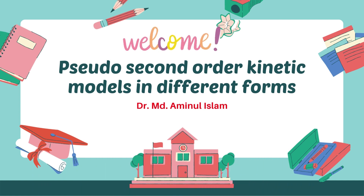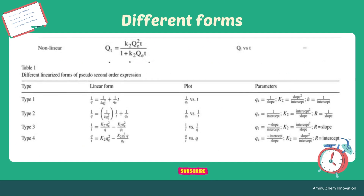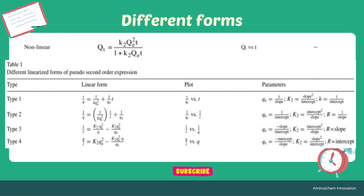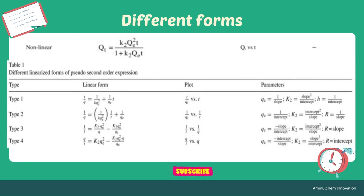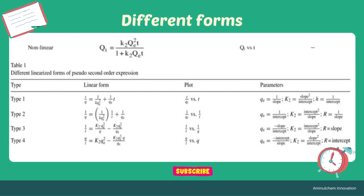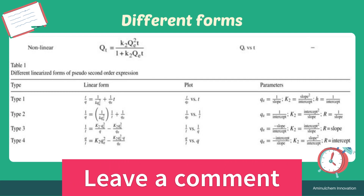This video is very important, so please do not skip. There are two forms of pseudo second order kinetic models. The first one is the non-linear form, which can be written as qt equal to k2·qe²·t divided by 1 plus k2·qe·t. If you fit qt versus t, you will get a plot, and you can easily fit the non-linear pseudo second order kinetic model using both Origin and Microsoft Excel.